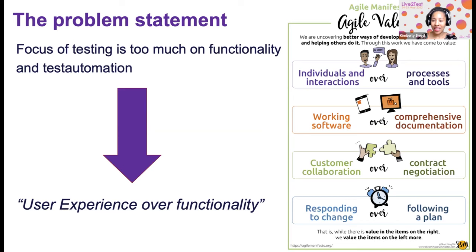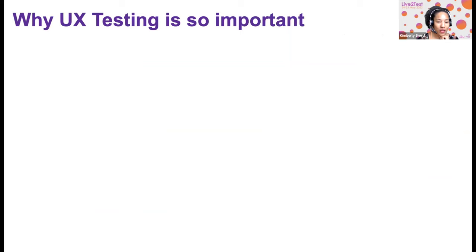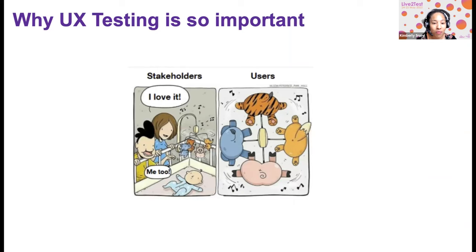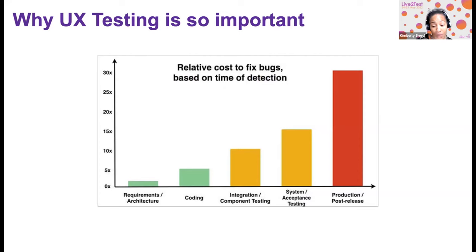There's a slogan I borrowed a little from the Agile manifesto: 'user experience over functionality.' A funny picture illustrates this — the business and everyone says 'wow, it's working great, it looks so nice,' and the user is like 'what am I looking at here?' So this is why you should not forget user experience, and of course the earlier you test it, the cheaper it is to fix findings.